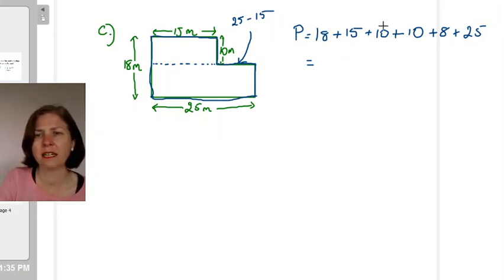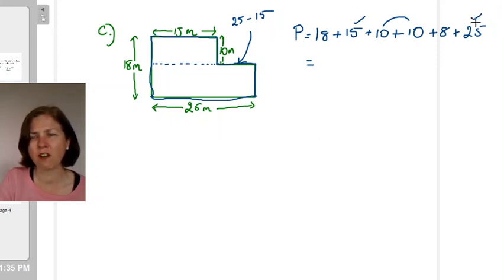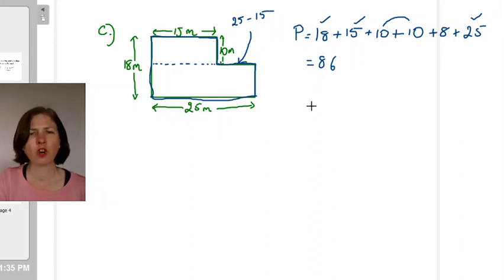So I'm going to do this by pairing together easy numbers. So my 10 and my 10 make 20 and if I now add my 15 that makes 35 and if I add another 25, 35 plus 25 gives me 60. Now I add my 18 that gives me 78 plus another 8 is going to give me 86.